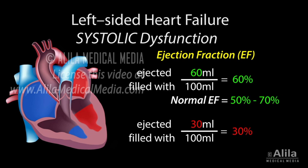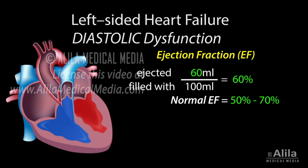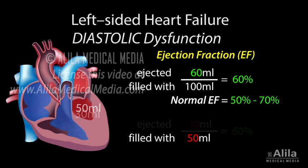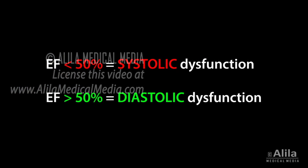In systolic heart failure, the ejection fraction drops below 40%. In diastolic heart failure, the ventricle is filled with less blood. This may be because it is smaller than usual, or it has lost the ability to relax. The ejection fraction may be normal, but the blood output is reduced. The ejection fraction is therefore commonly used to differentiate between systolic and diastolic dysfunction.